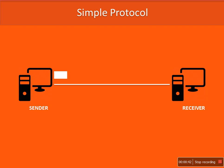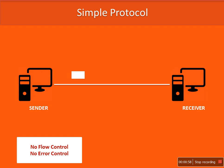There will be chances of the receiver machine dropping incoming packets, and the sender also has no idea whether sent packets are received at the receiver successfully or not. In this simple protocol, packets are sent to the receiver with no flow control and no error control. If during transmission a packet is corrupted, neither the sender nor receiver would know whether that packet is corrupted or not.